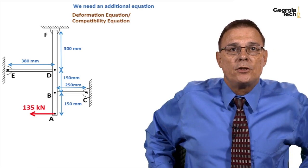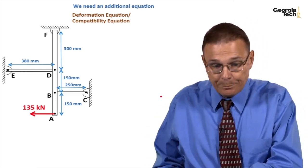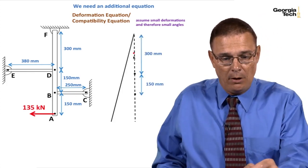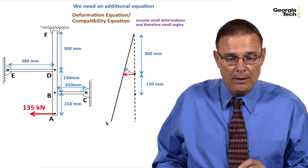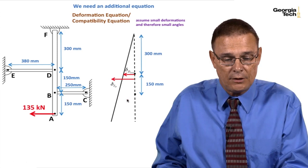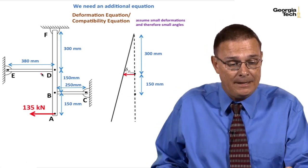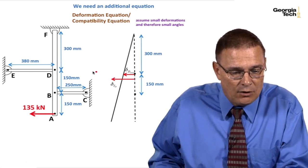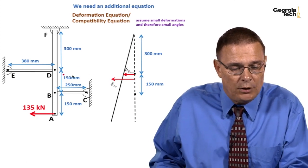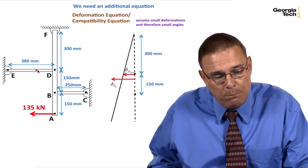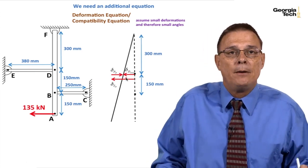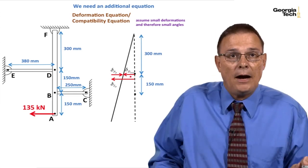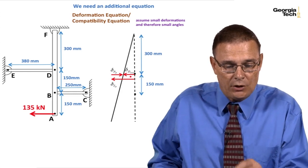We can write a deformation equation or a compatibility equation. We're going to assume, as we did before, small deformations and small angles. This is my bar in its original position. This is in the deflected shape. This is the deflection total at D. For the deflection total at D, I assumed that this member was in tension. That means it shrank quite a bit due to the temperature change, so much so that I had to pull it back in tension with a normal force to have it end up at the total deformation at D shown here.